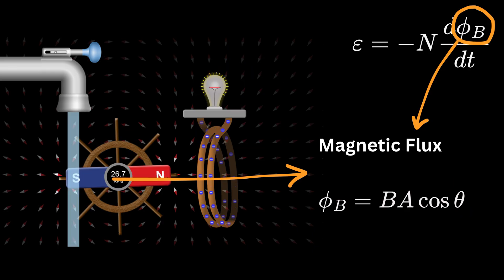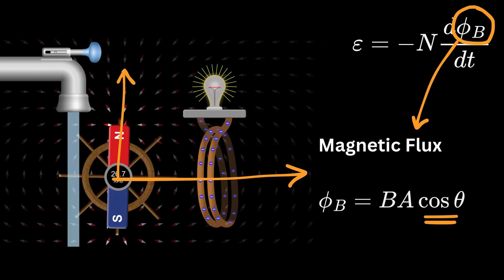If the field goes straight through the loop, then cosine of theta is one. If it's sideways, cosine of theta becomes zero. That's why the orientation of the coil matters too.